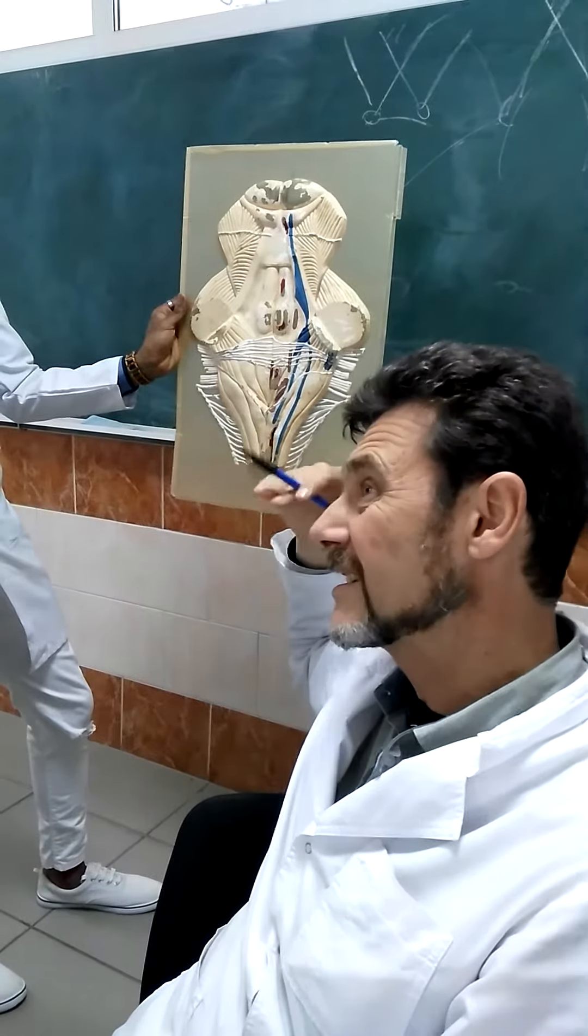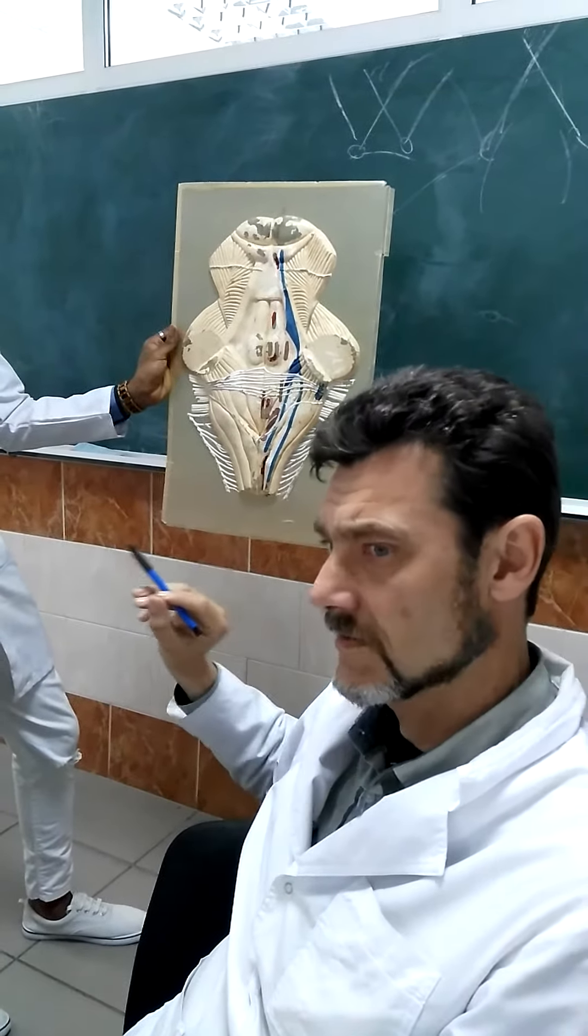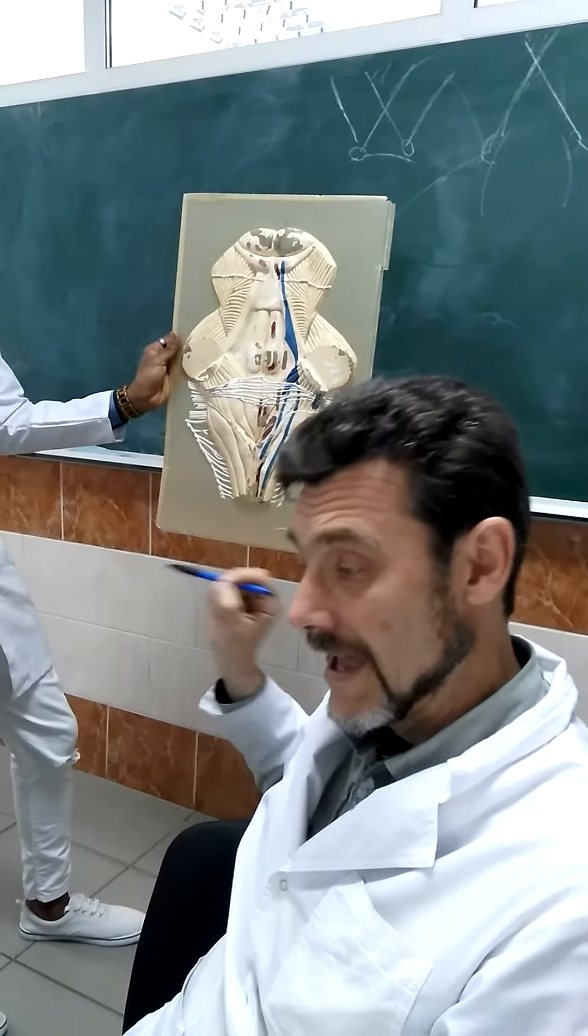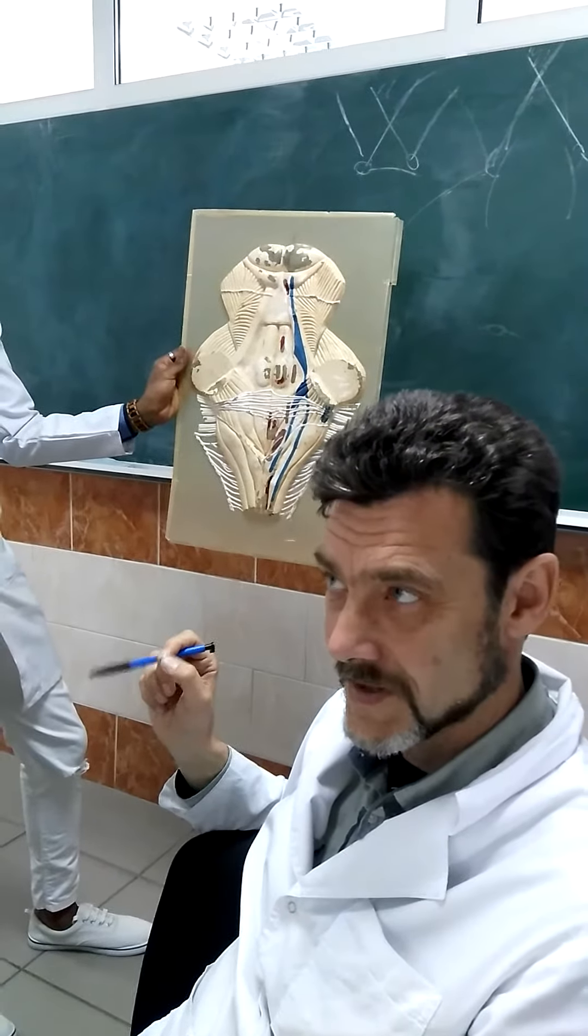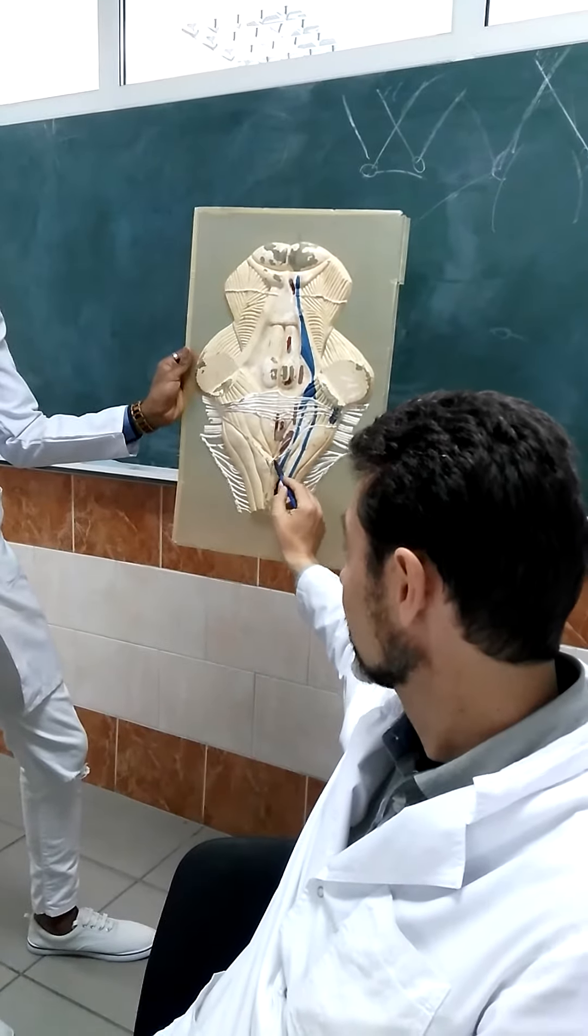Yes, it innervates all structures of the neck, thorax, and abdominal cavity. All structures which have glands and smooth muscles, all internal organs. It is the main parasympathetic nerve of the bone.